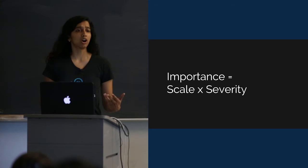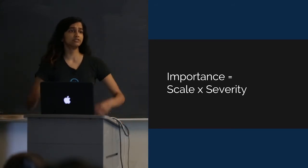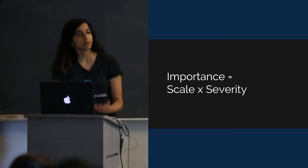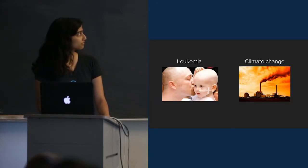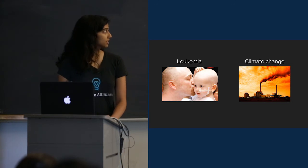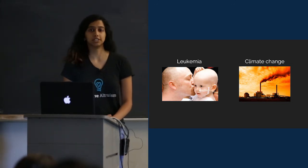Even though it might seem hard, we can actually compare really disparate causes that do very different things relatively easily on the dimension of importance. For example, let's consider the causes of leukemia and climate change.